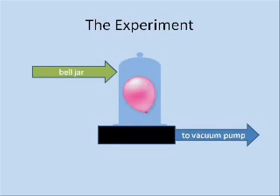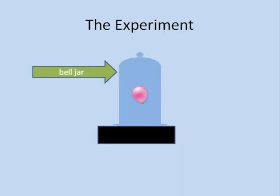The apparatus for today's experiment will be a bell jar placed on a vacuum pump. If we place a balloon that contains a small amount of air inside the bell jar and then use the vacuum pump to remove air pressure from the bell jar, we can watch how the volume of the gas inside the balloon changes because the size of the balloon will change.